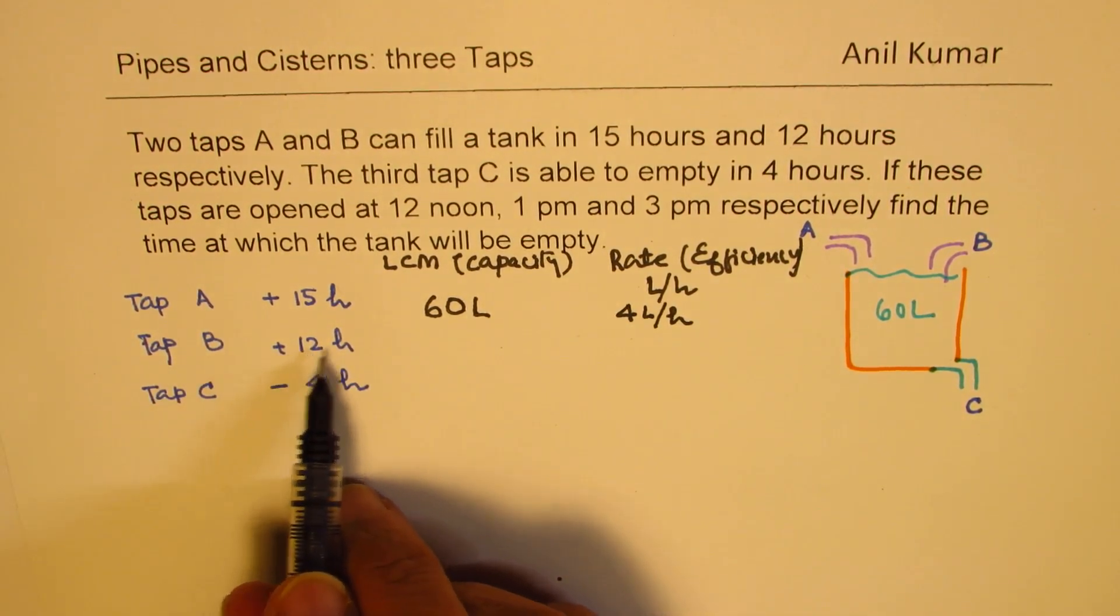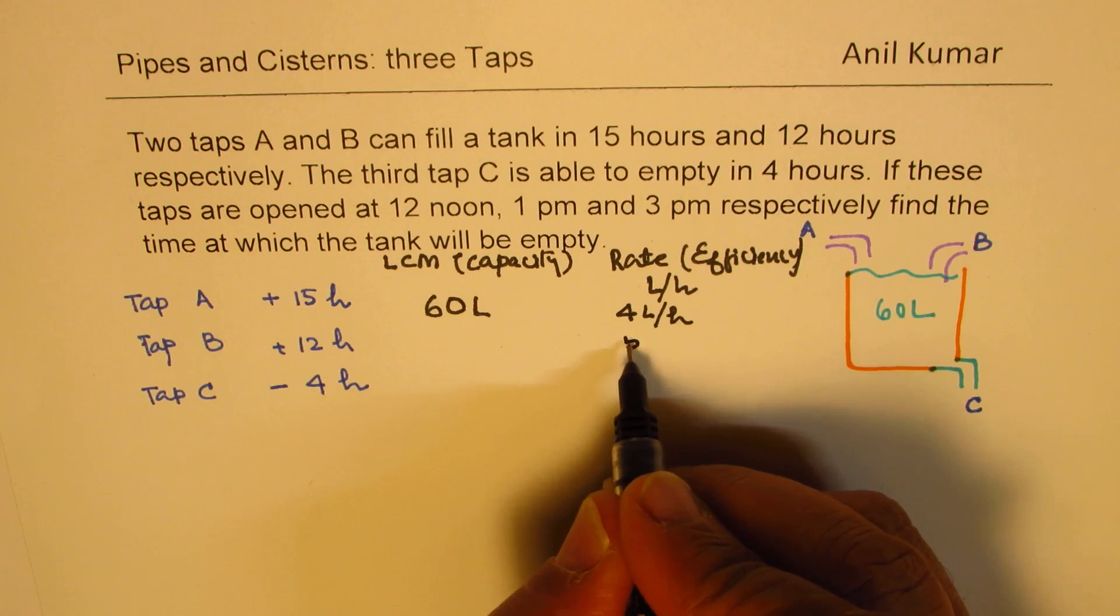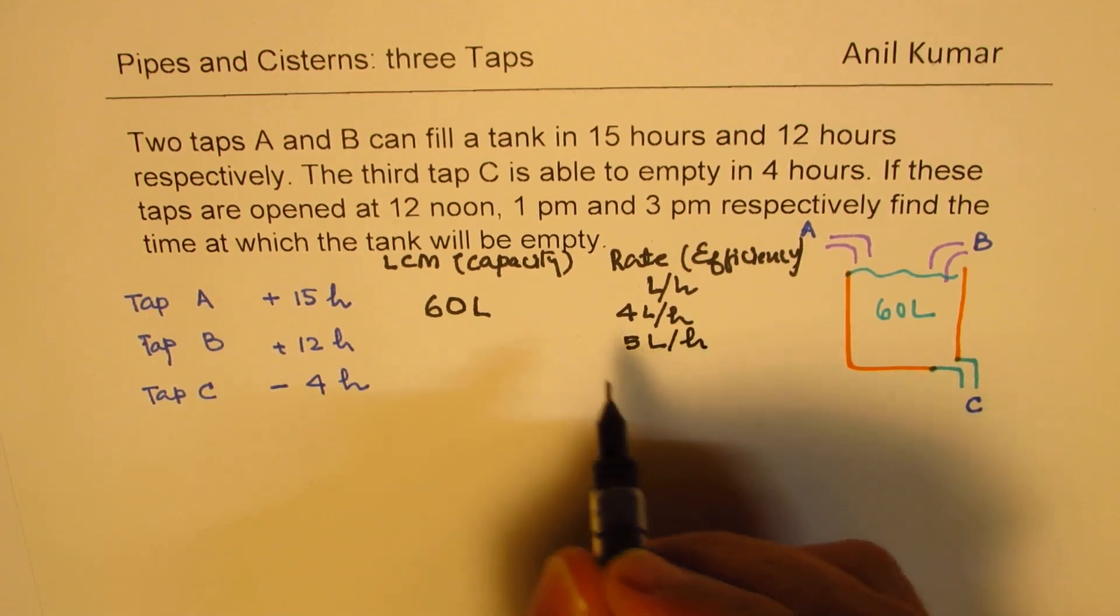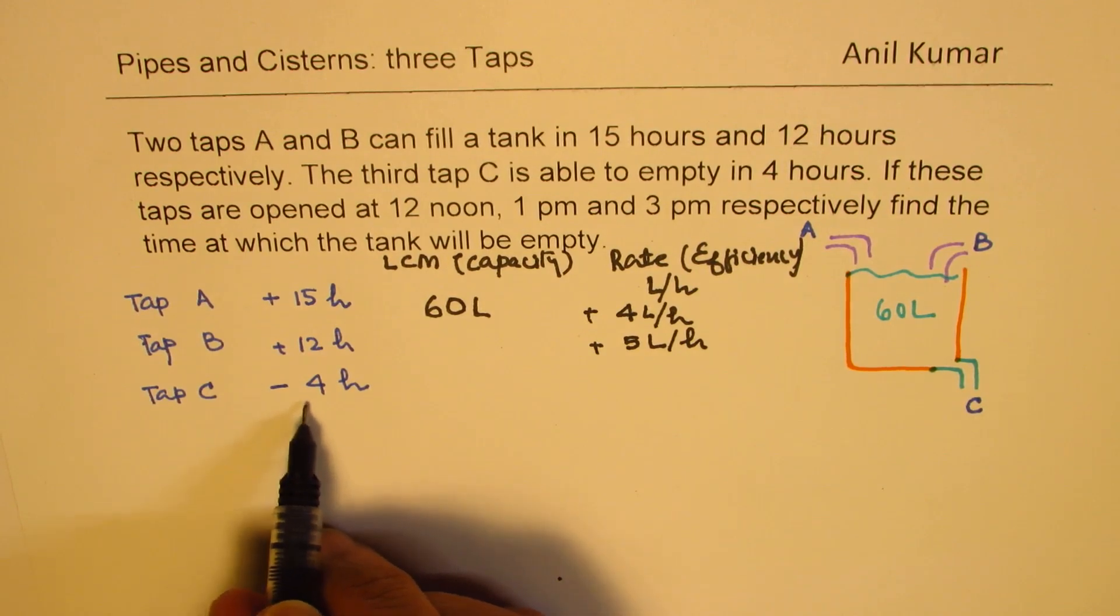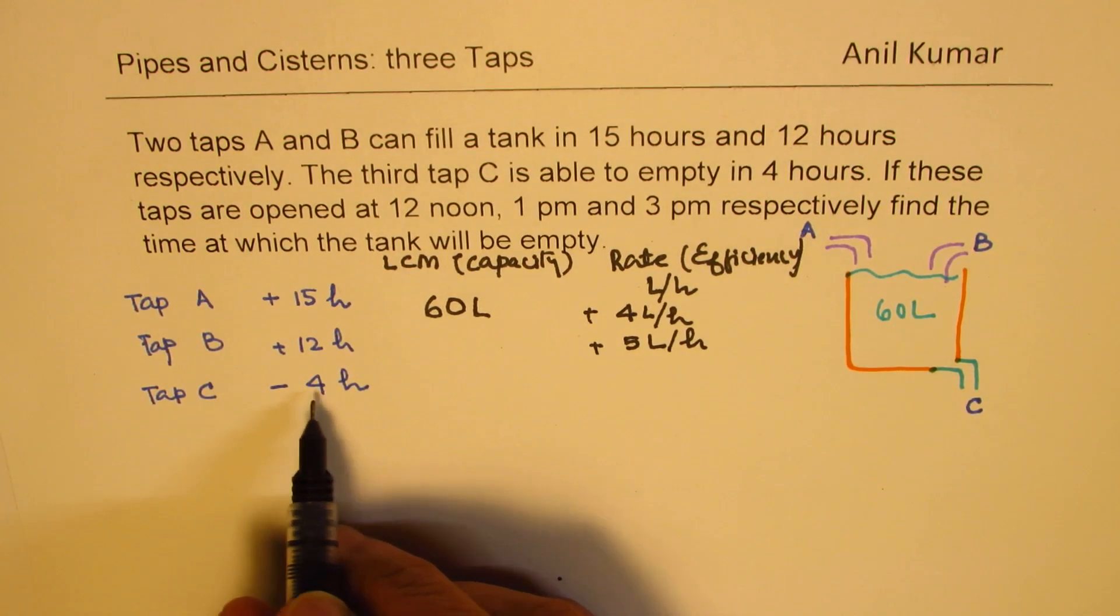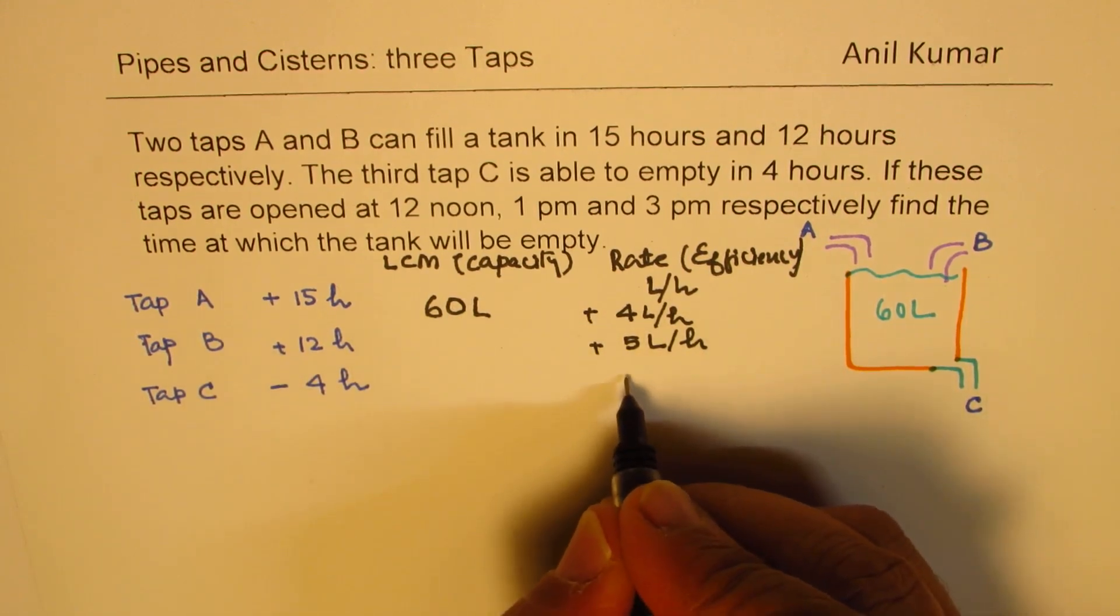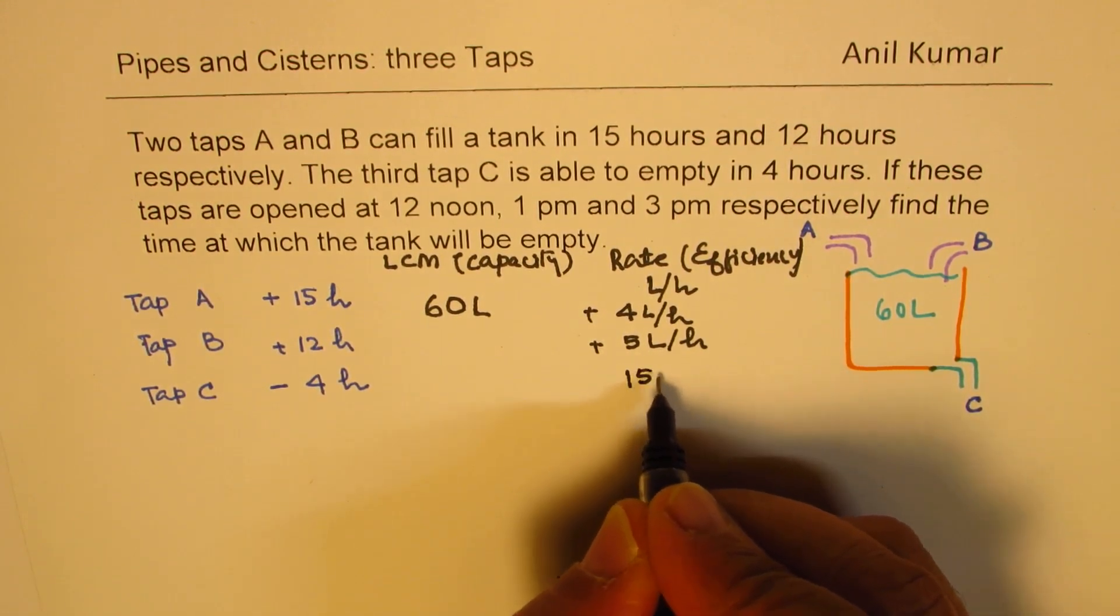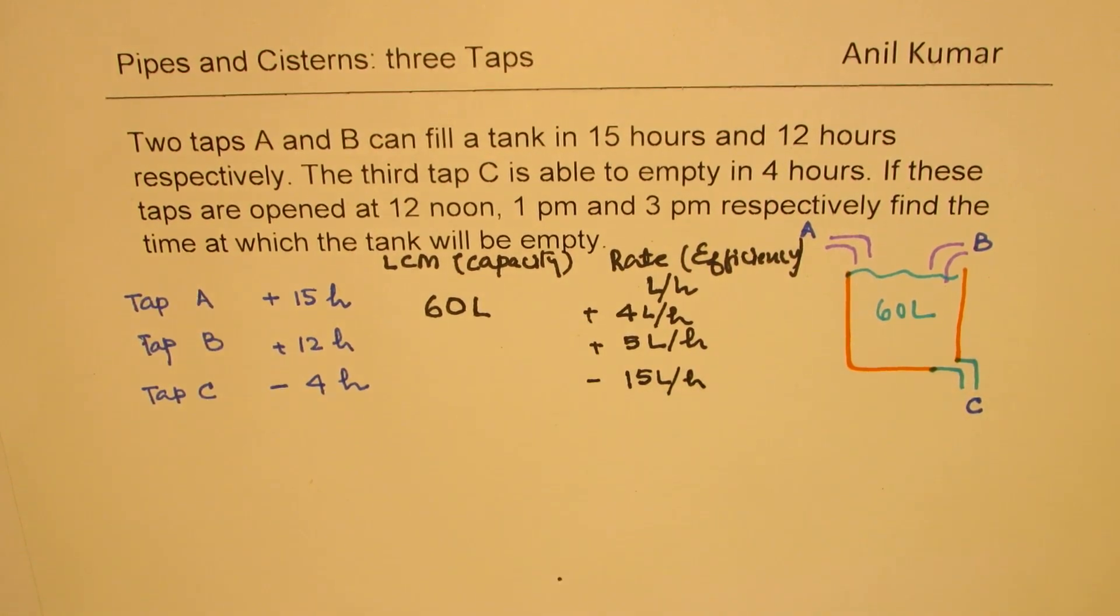For tap B, if you divide 60 by 12, you get 5 liters. So you get 5 liters per hour. And these are positive numbers. As far as C is concerned, it drains away. So dividing by 4, it gives half and half, which is 15. So it is 15 liters per hour. And it's draining.